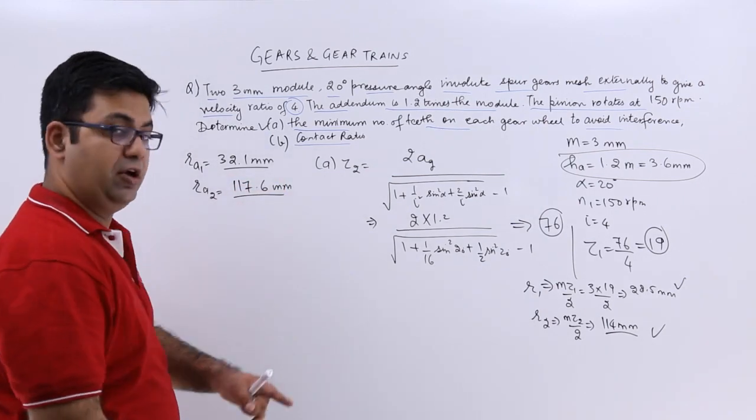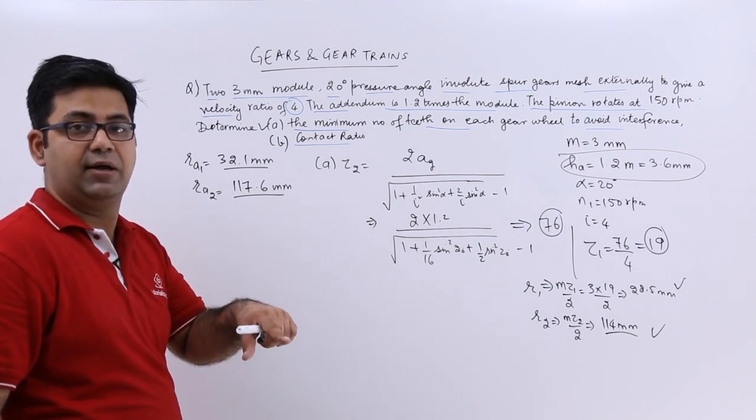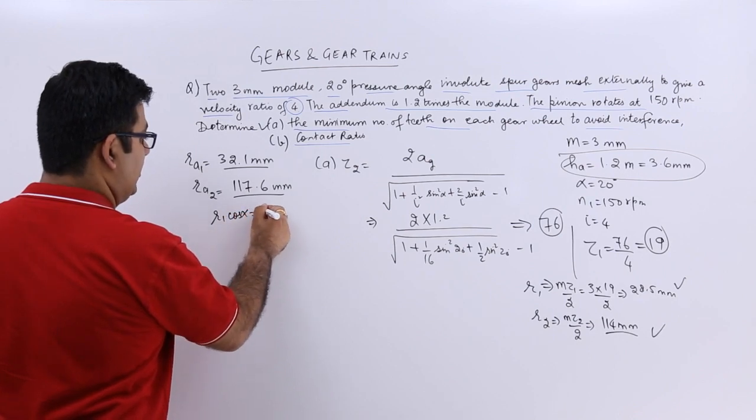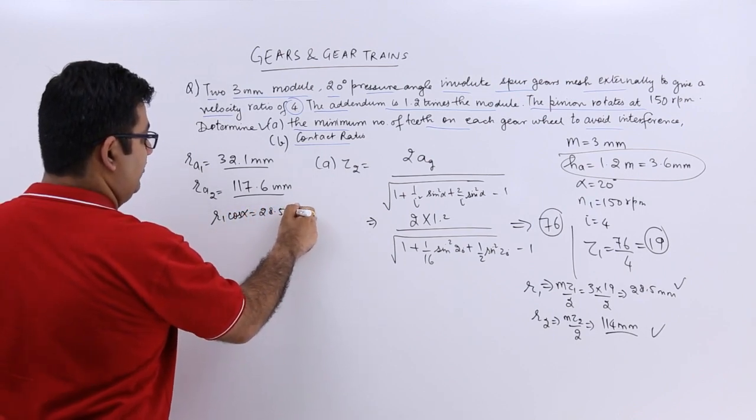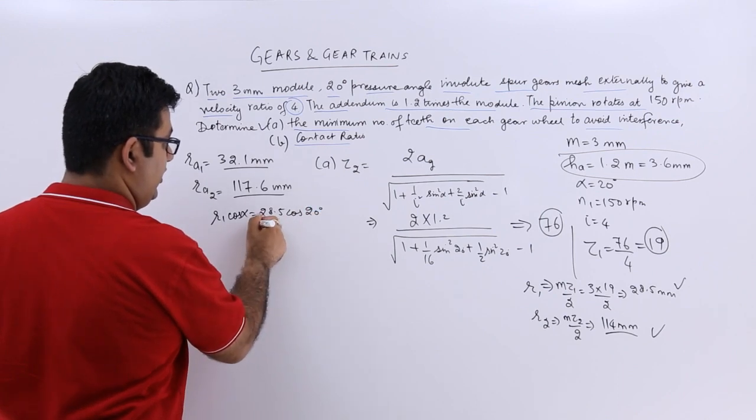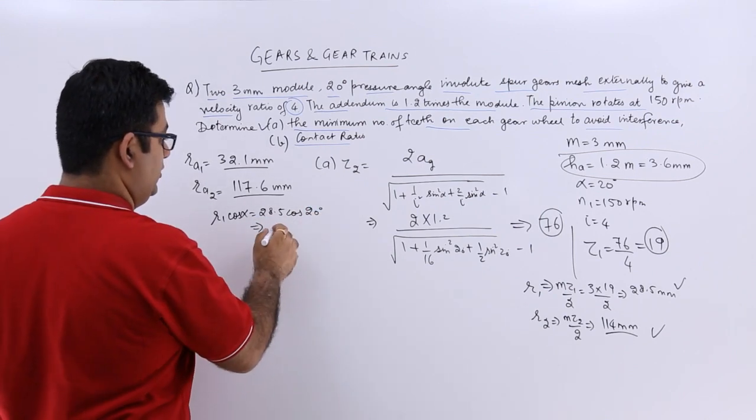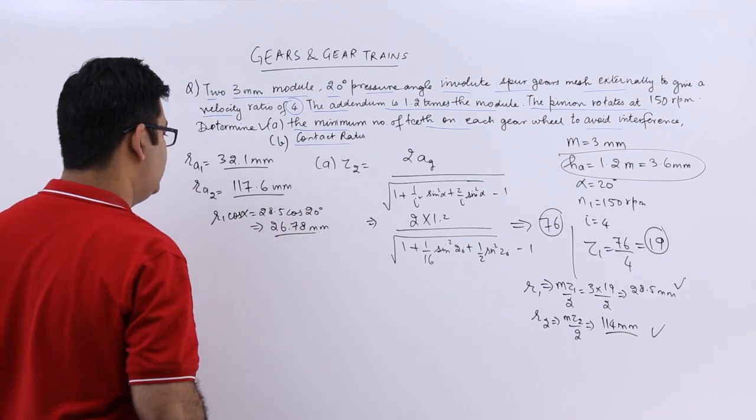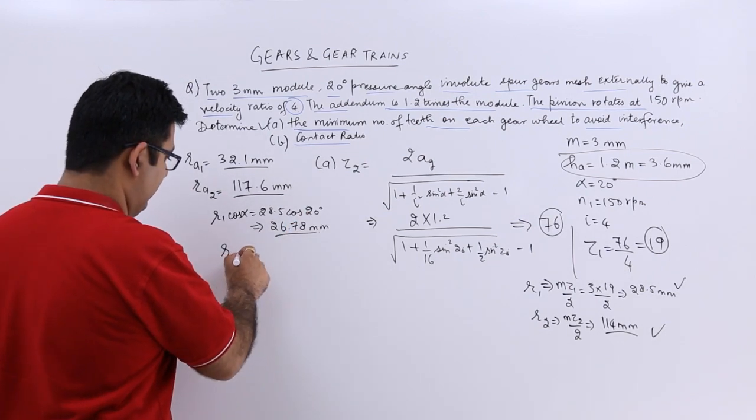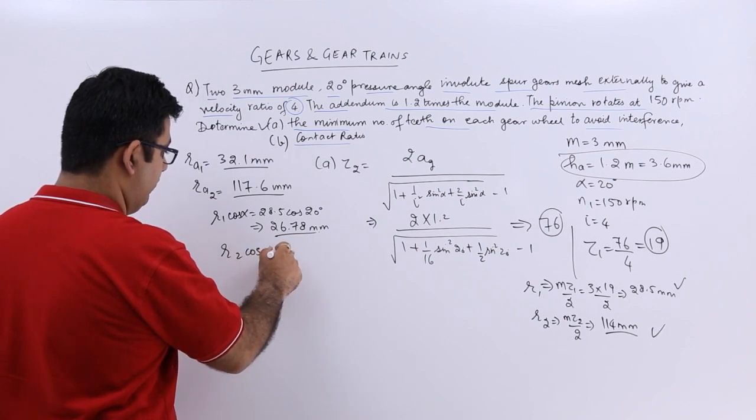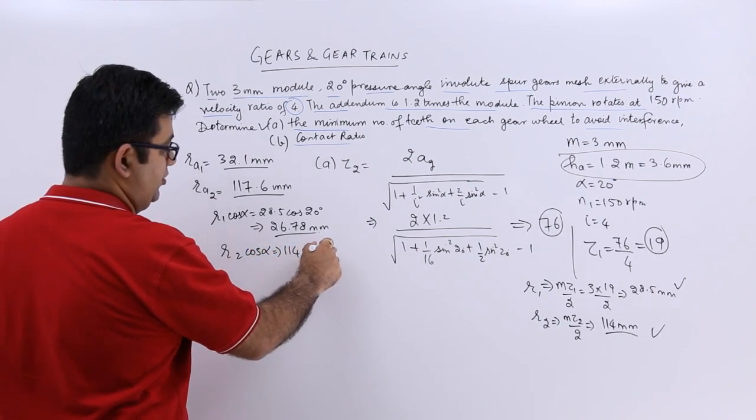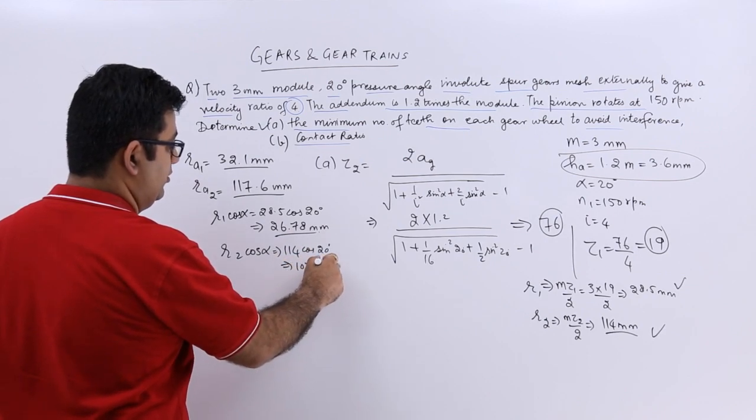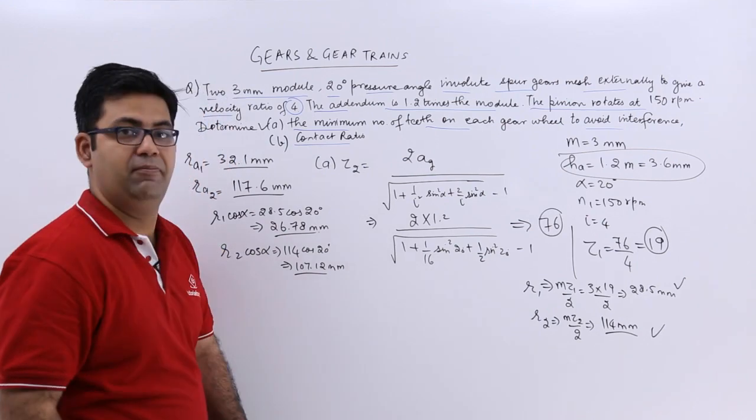We also need R1 cos alpha and R2 cos alpha. R1 cos alpha is 28.5 cos 20 degrees, this would be 26.78 millimeters. And your R2 cos alpha would be 114 cos 20, this would be 107.12 millimeters.